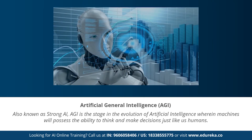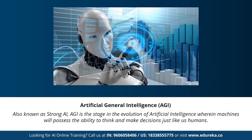Next we have artificial general intelligence, also known as strong AI. This stage is the evolution of artificial intelligence, wherein machines will possess the ability to think and make decisions just like human beings. There are currently no existing examples of strong AI, but it's believed we will soon be able to create machines as smart as humans. Strong AI is considered a threat to human existence by many scientists, including Stephen Hawking, who quoted that the development of full artificial intelligence could spell the end of the human race.